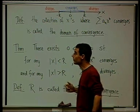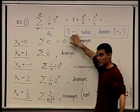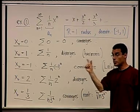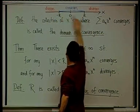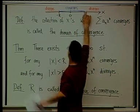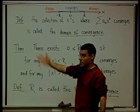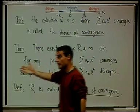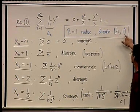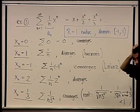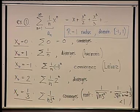Student question: can you go over the domain for example 1? Once you agree r = 1, you know it converges between -1 and 1, diverges outside, and you only need to check the two endpoints manually. We found manually that at -1 it converges and at 1 it diverges. Therefore -1 is in the domain (closed bracket) and 1 is not (open bracket).